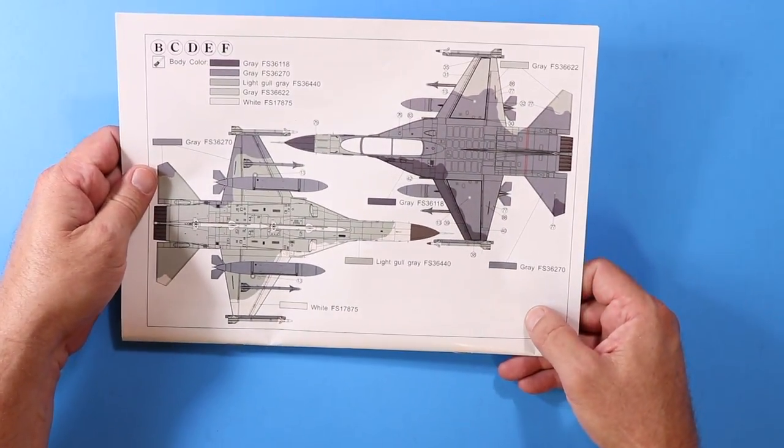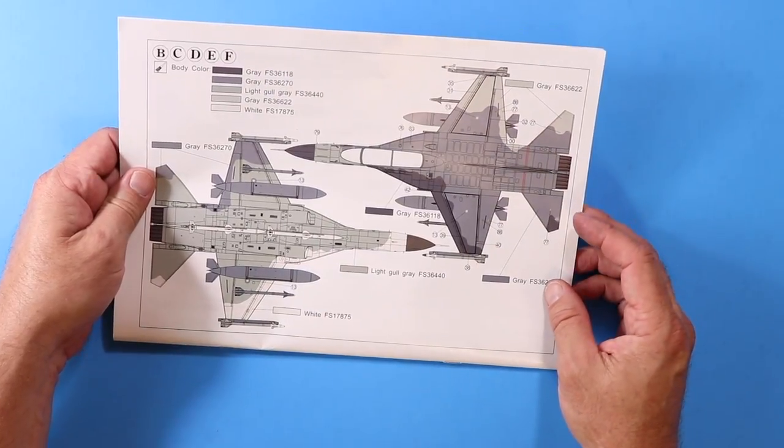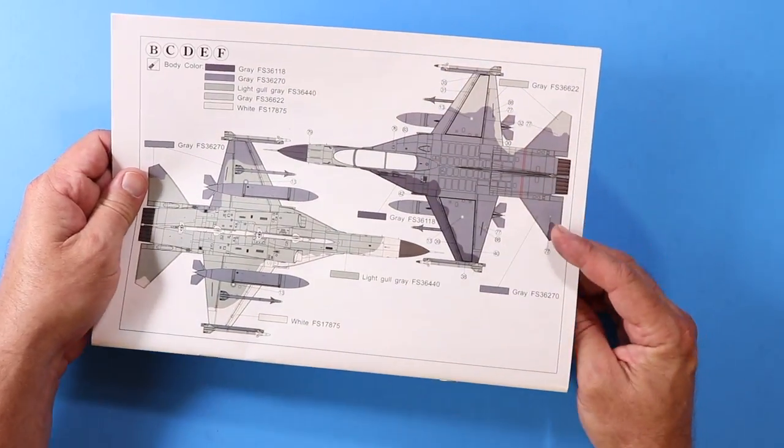And those are instructions like I said the top and the bottom. And this is going to be the same for all variants. So paint's pretty much straightforward. It looks like it's going to be all decal work. Speaking of decals that's next.